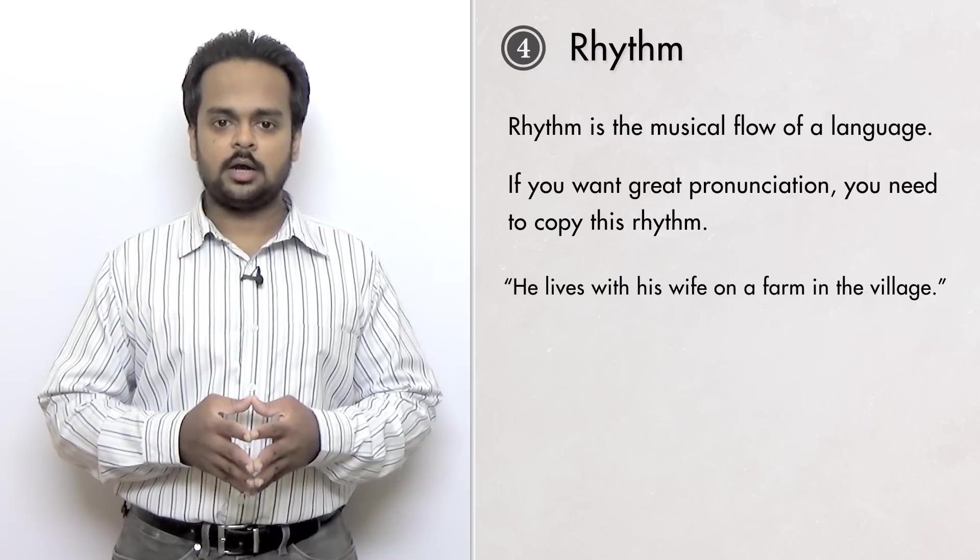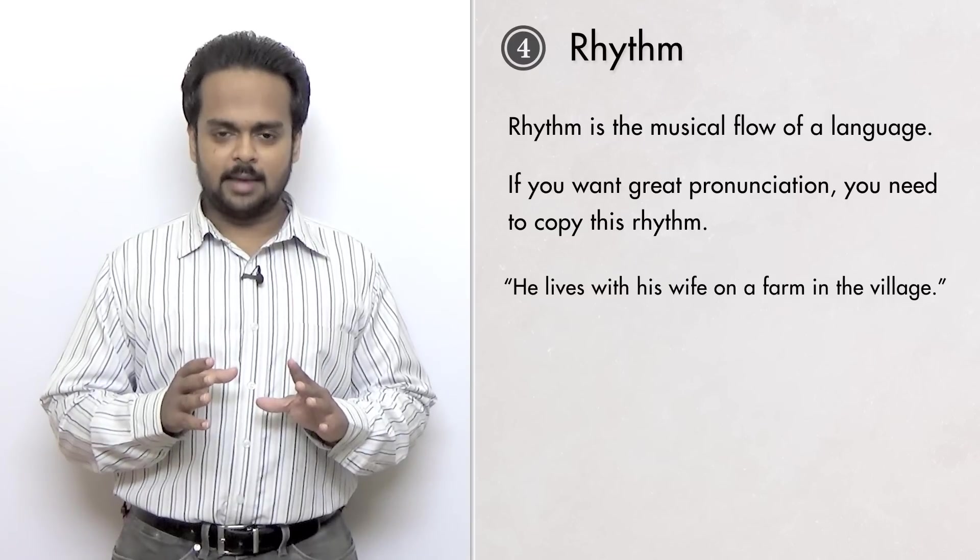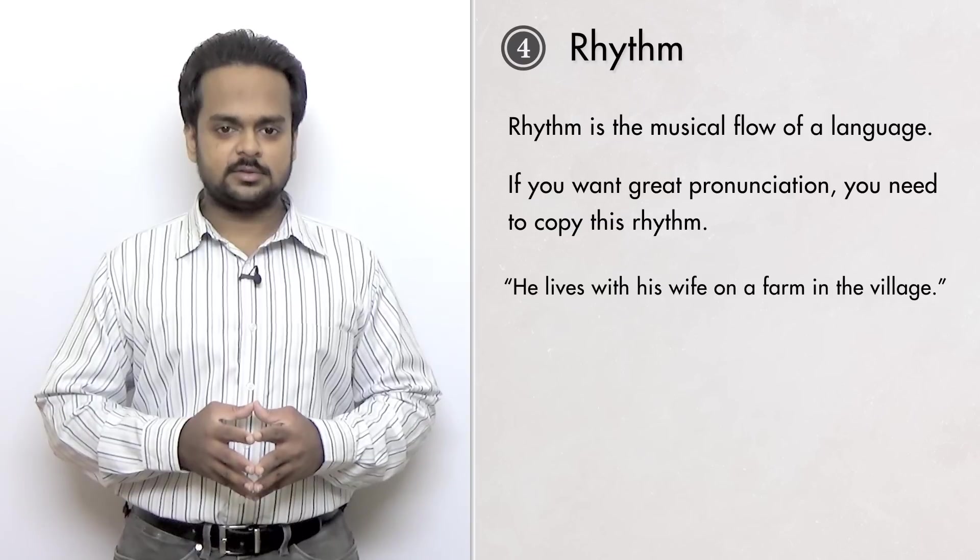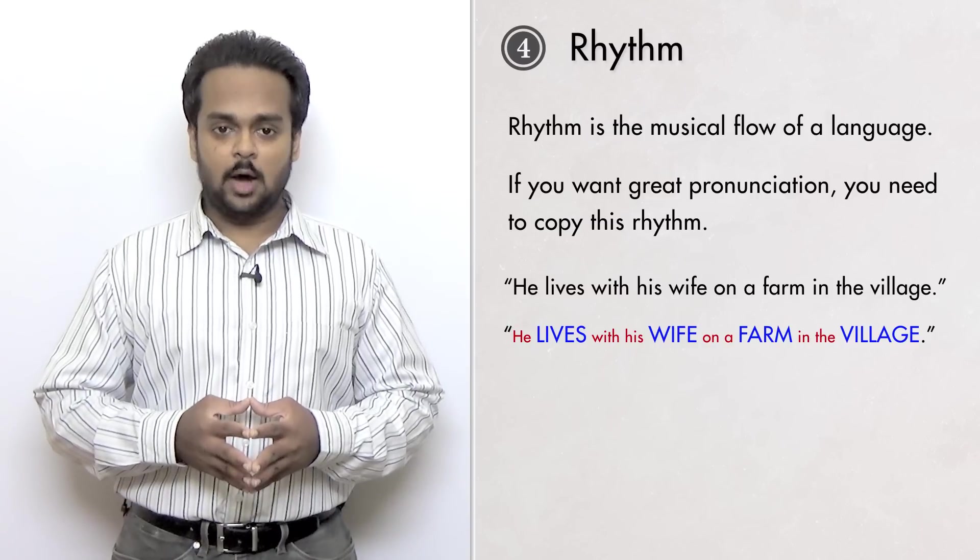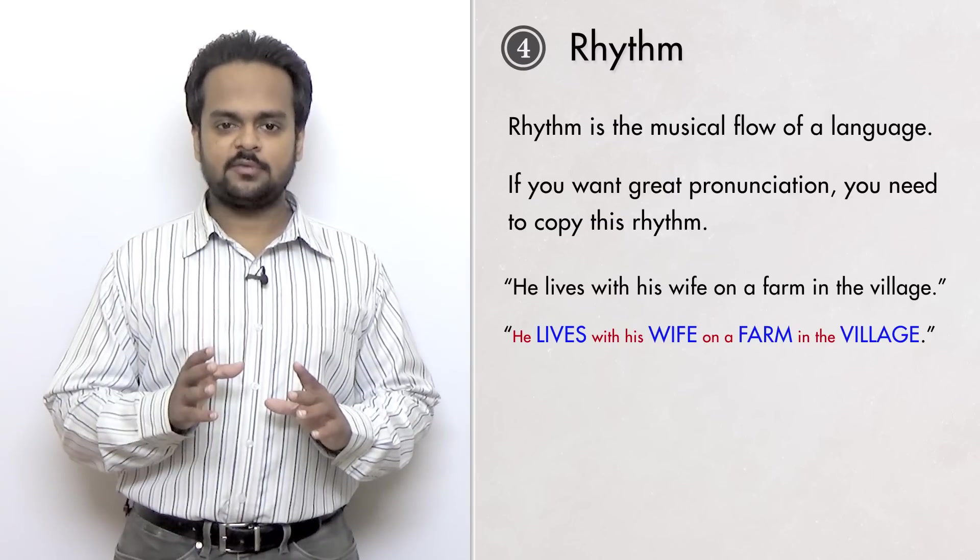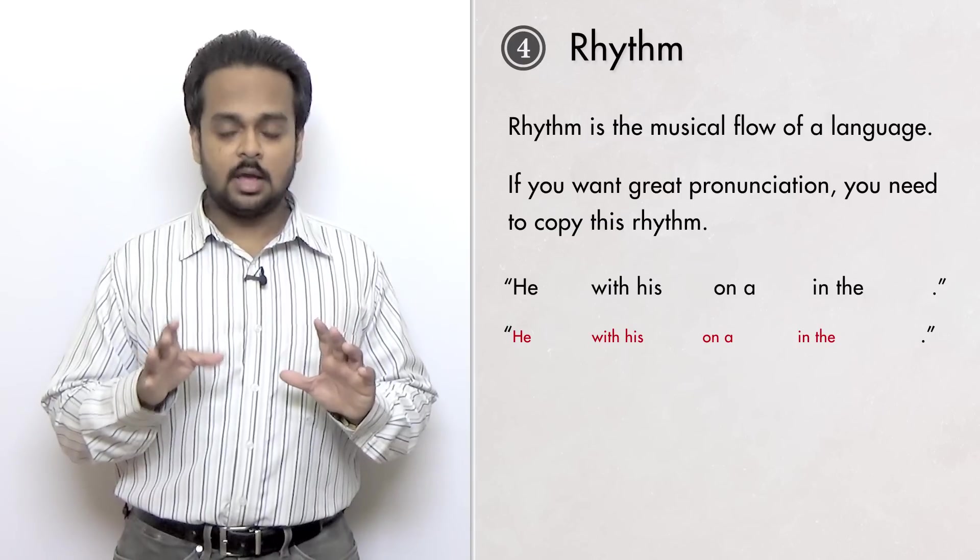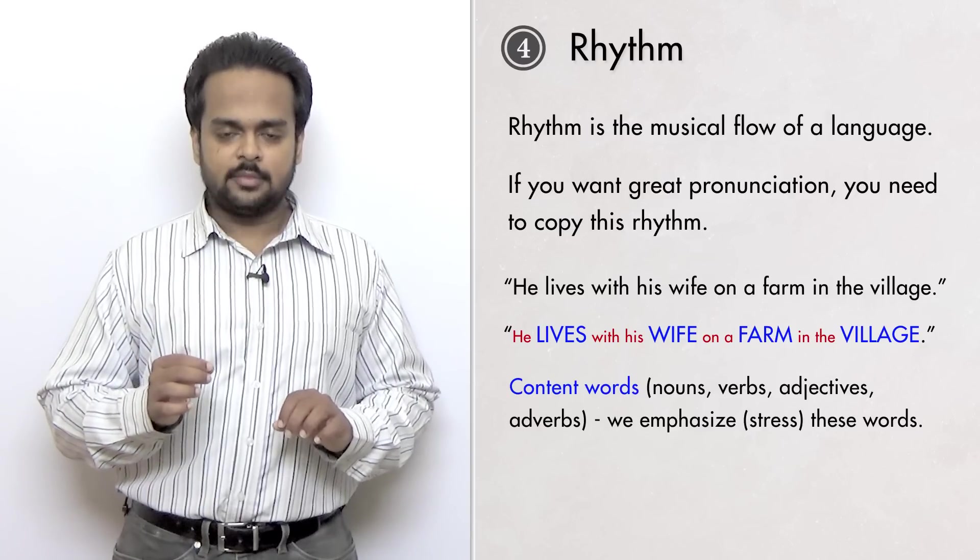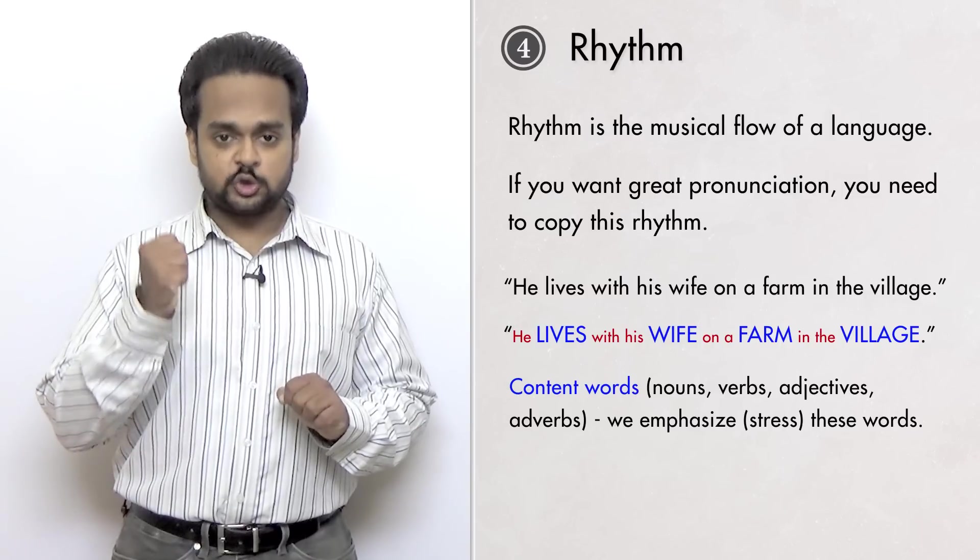Take this sentence for example. He lives with his wife on a farm in the village. Did that sound right? You could tell that there was something wrong with it. Maybe I sounded like a robot. That was because my rhythm was completely wrong. So what is the right way to say this sentence? Here it is. He lives with his wife on a farm in the village. That sounded correct because I gave importance to some words in the sentence. Notice that lives, wife, farm, and village stand out. If I take away these words, the sentence has no meaning. That's because these words have all the meaning or content in the sentence. And they're called content words. They're usually nouns, verbs, adjectives, and adverbs. And they are emphasized, that is, stressed in a sentence.